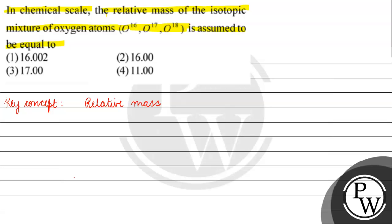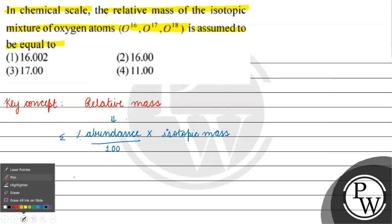The key concept for this question is relative mass. What happens in our relative mass? We have to see the isotopes. Relative mass of the isotopes is basically equals to the percentage abundance of the isotope into its isotopic mass. That is percentage abundance and its isotopic mass summation divided by 100. This is the relative mass of our isotopes.